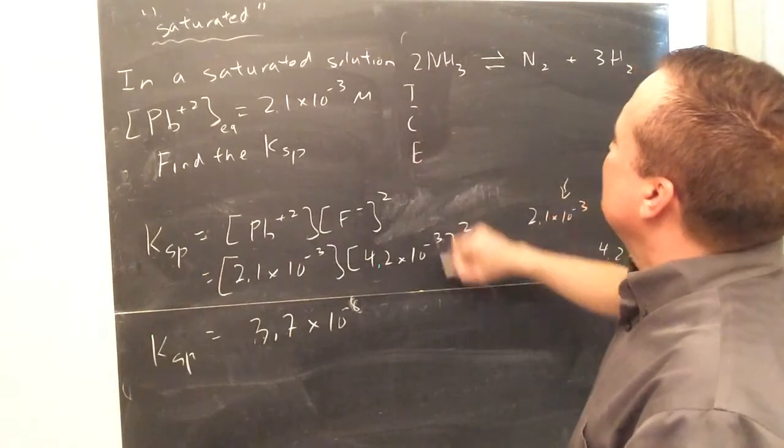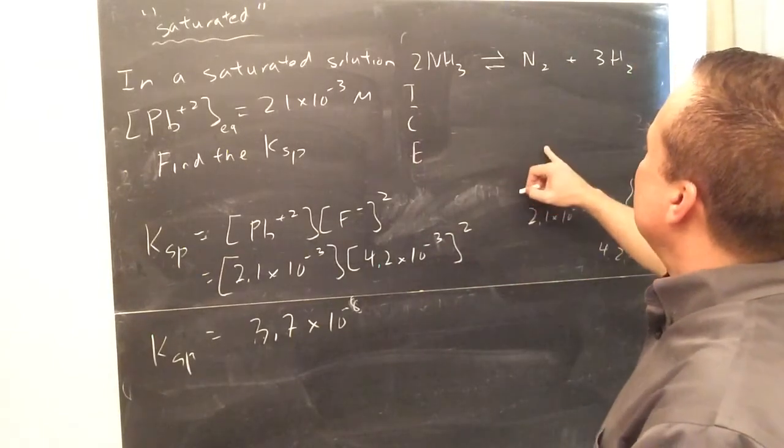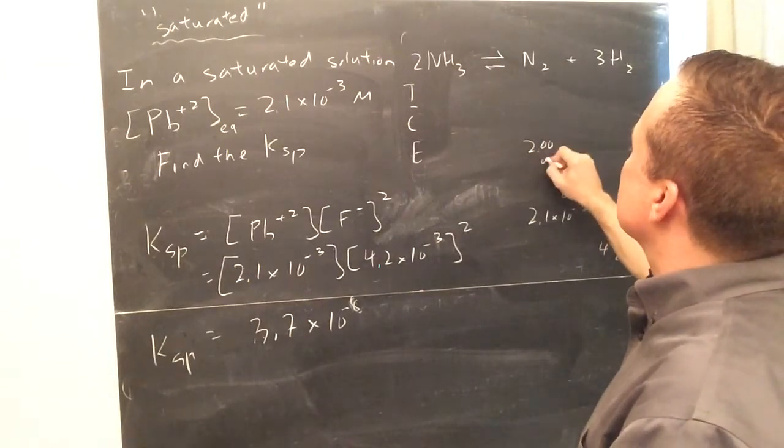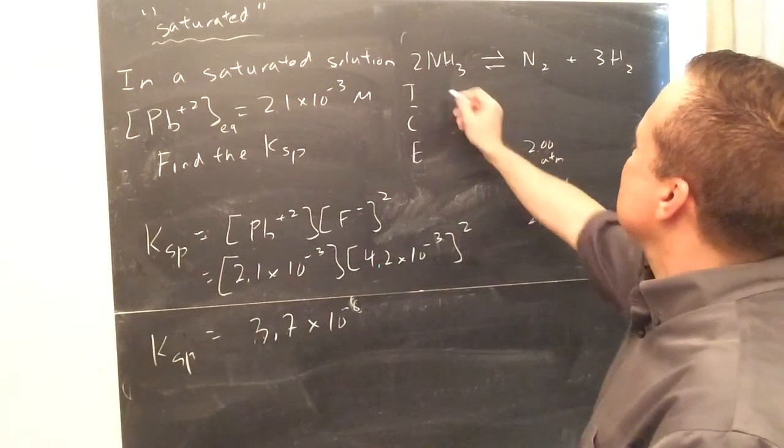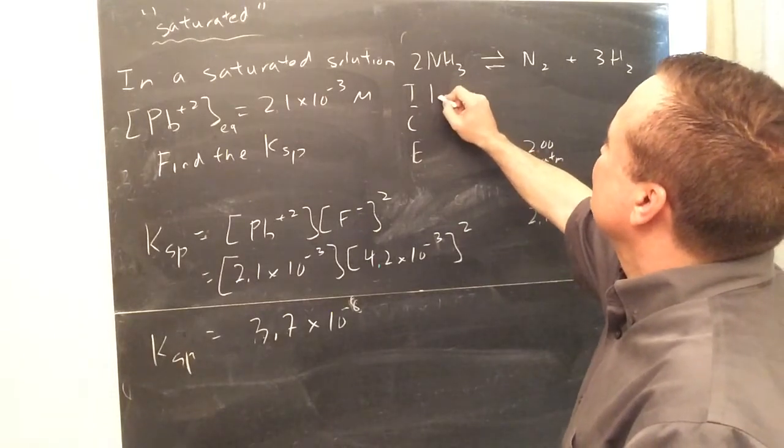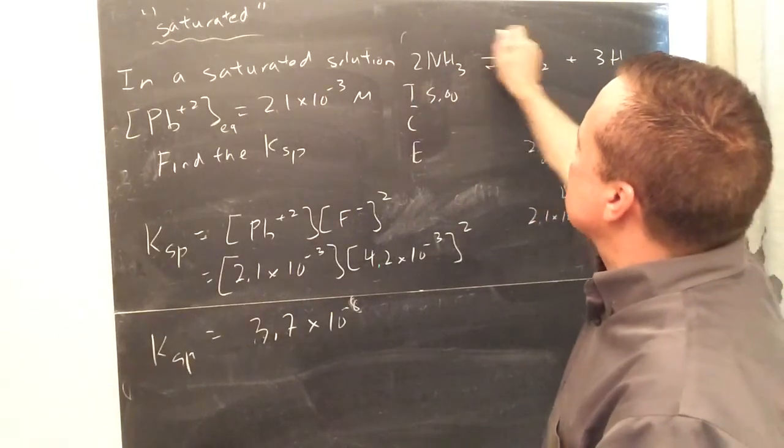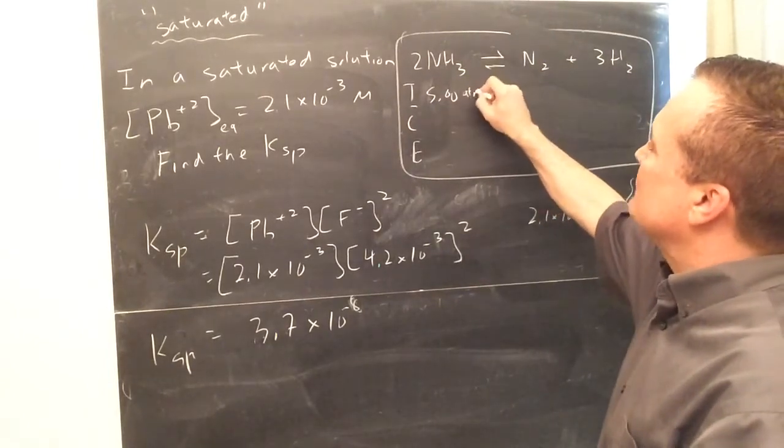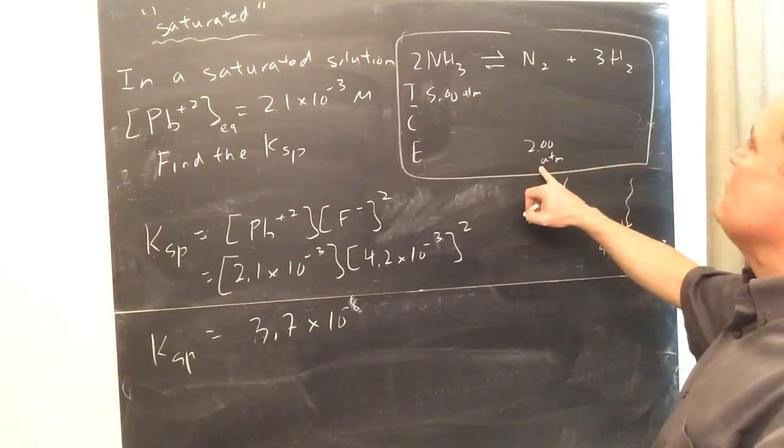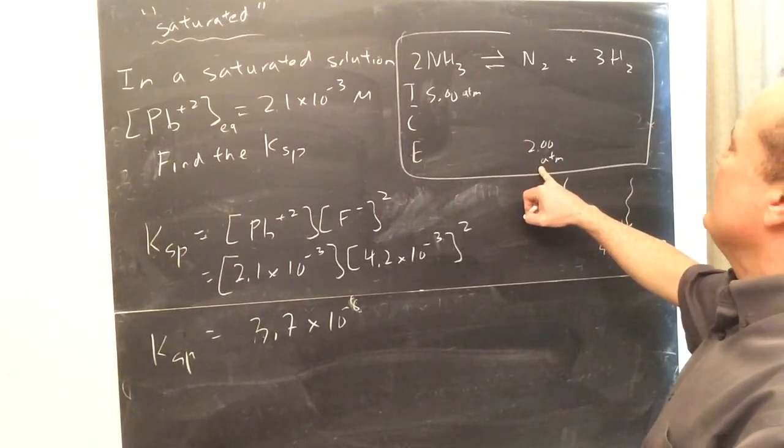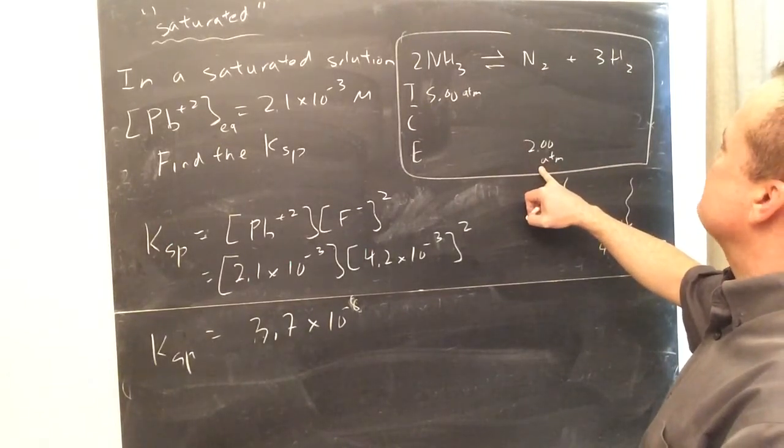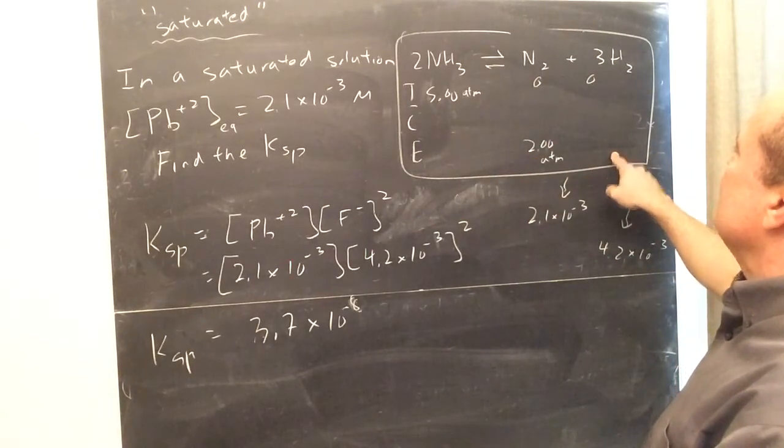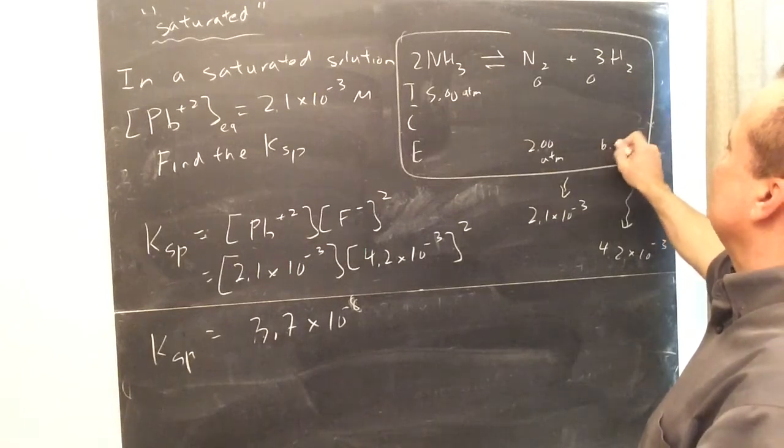You know, if you did an icebox there, if they told you something like, at equilibrium, you know, you had two atmospheres of N2, and say you started with, I don't know, I'm not going to do the whole math, but I'll just say, say you started with five atmospheres of this, or five molar of this, and in equilibrium, you had two atmospheres of that. Well, then, you would be able to say, well, that means if I have two, if they were both zero, if that were two, then that would have to be six, right?